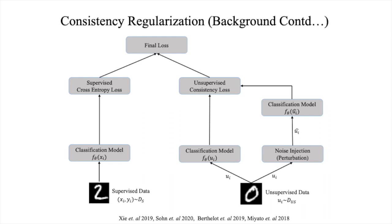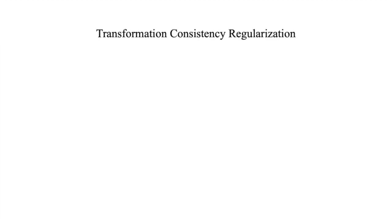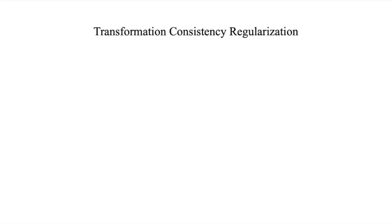However, applying consistency regularization in image-to-image translation is not straightforward, because images with varied transformations should have different predictions, unlike in the case of image classification. In this work, we propose transformation consistency regularization, which delves into a more challenging setting of image-to-image translation, which remains until now unexplored by current semi-supervised algorithms.